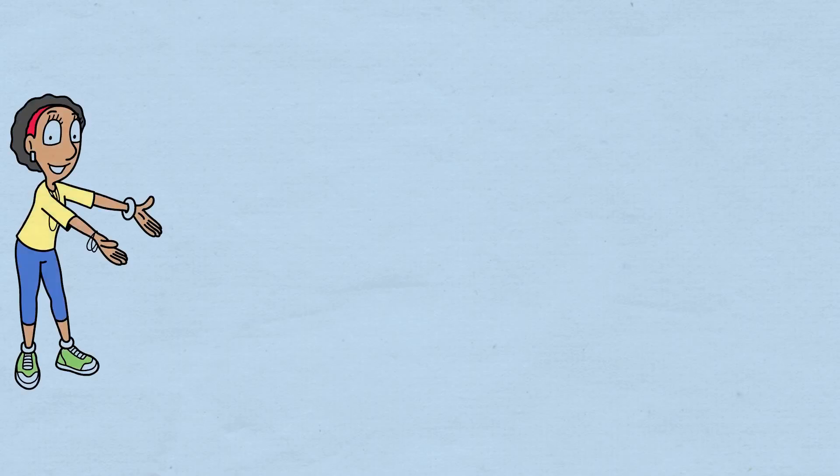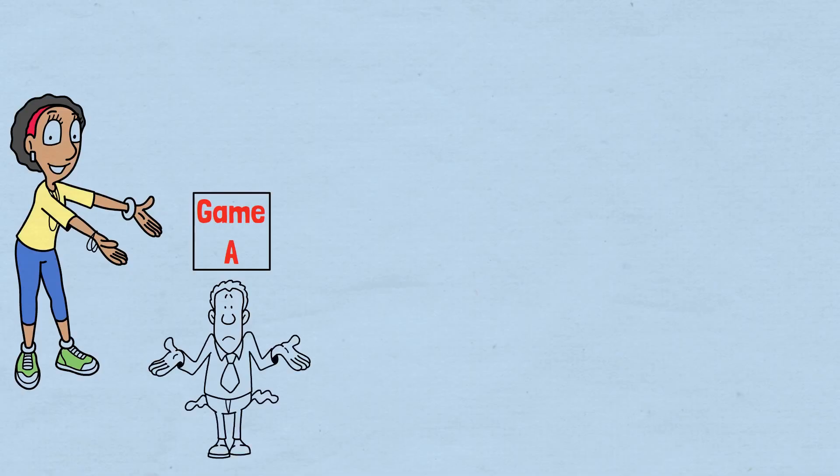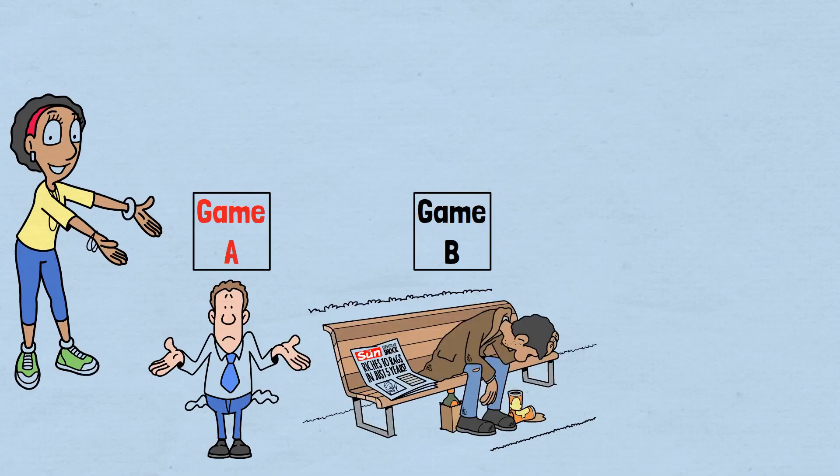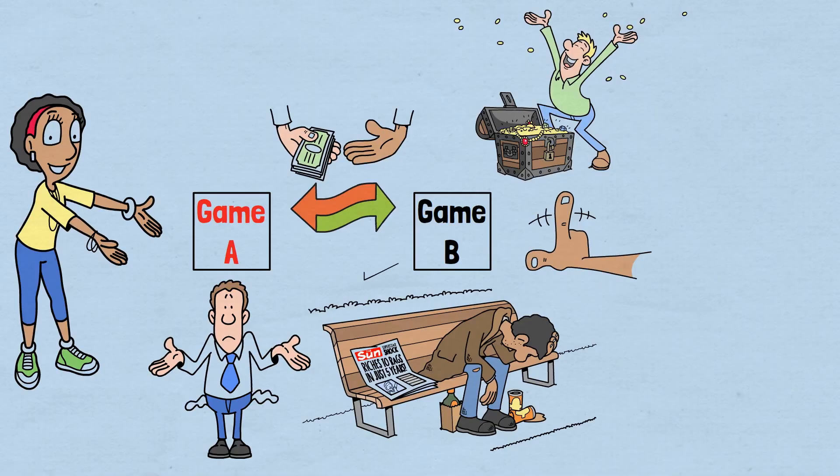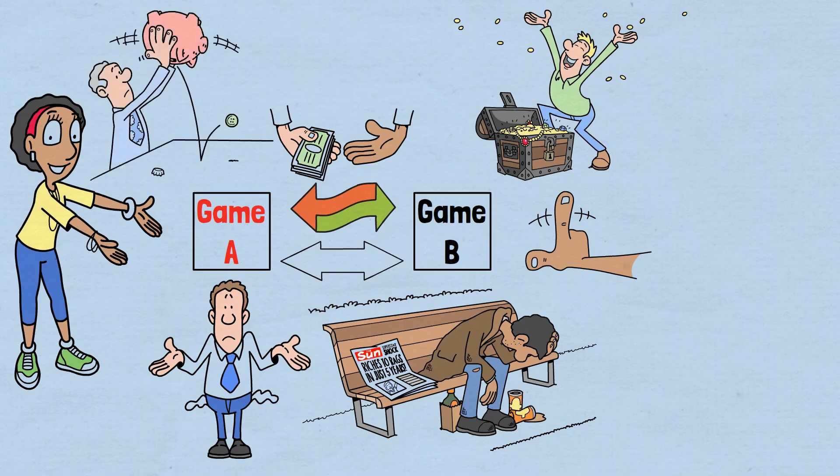I offer you two games to play. Game A is simple: every time you play it, you're guaranteed to lose money. Game B is equally straightforward: every time you play it, you're also guaranteed to lose money. But if you alternate between these two guaranteed losing games, you can actually make a profit. Not just break even—you can generate consistent, predictable winnings by switching back and forth between two games that individually will bankrupt you. This isn't a trick or a loophole.